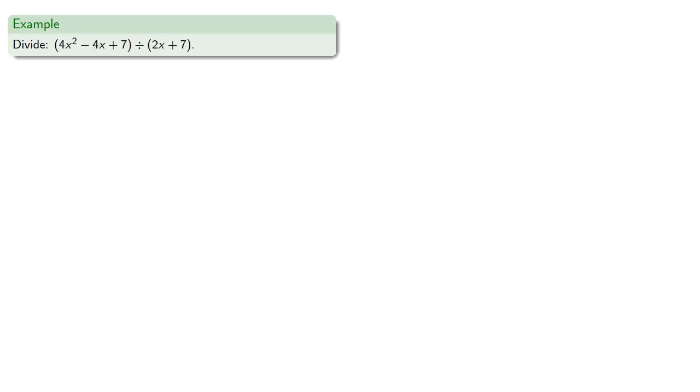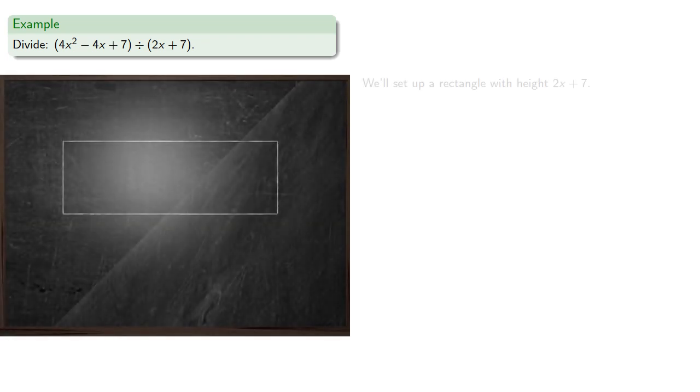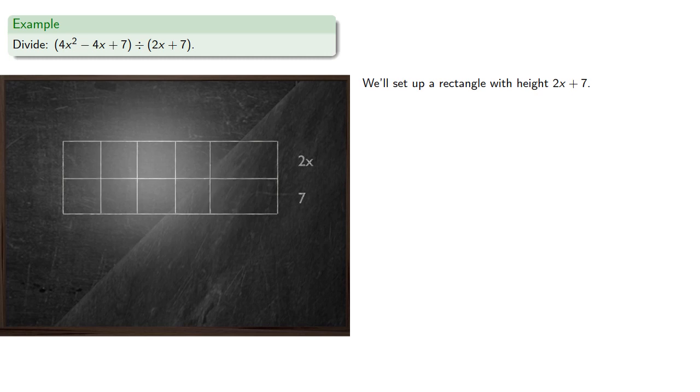So let's see if we can find other quotients. Let's try an example where we don't already know the answer. Let's divide 4x squared minus 4x plus 7 by 2x plus 7. We'll set up a rectangle with height 2x plus 7. So our height will be divided into two portions. And we'll divide the width into some number of partitions. We don't know how many, so let's just add a bunch.